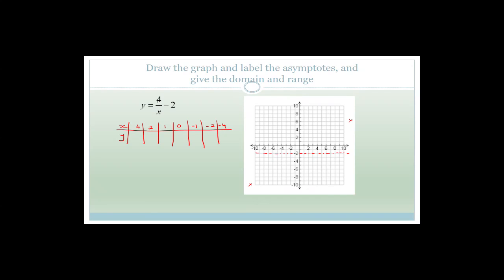When x is four: four divided by four is one, minus two is minus one. When x is two: four divided by two is two, minus two is zero. When x is one: four divided by one is four, minus two is two. When x is zero, you get to the asymptote — it becomes minus two because you end up with minus two, which is the asymptote. When x is minus one: four divided by minus one is minus four, minus two is minus six. When x is minus two: four divided by minus two is minus two, minus two is minus four. Four divided by minus four is minus one, minus two is minus three.